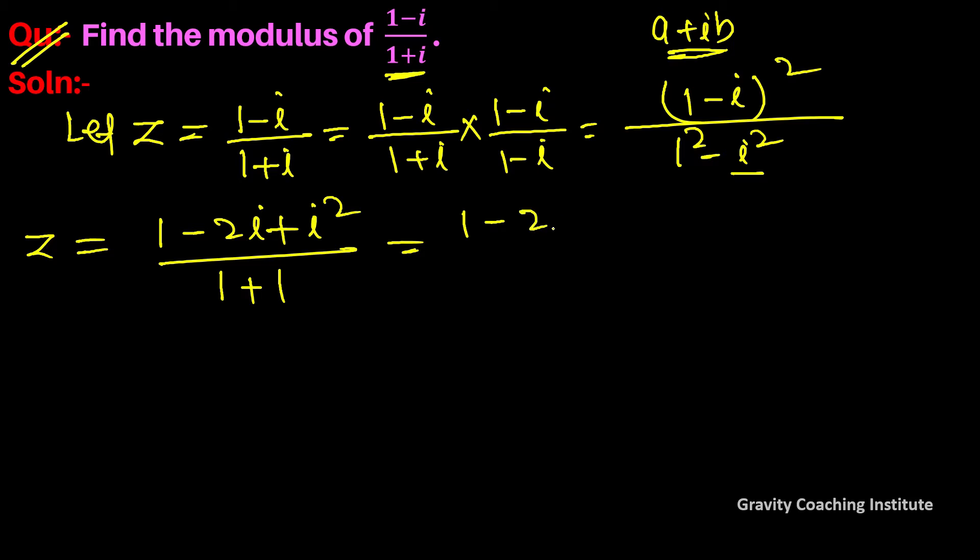So 1 minus 2 iota minus 1 upon 2, and the 1s cancel. So minus 2 iota upon 2 gives us minus iota. So z equals minus iota.